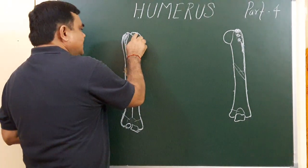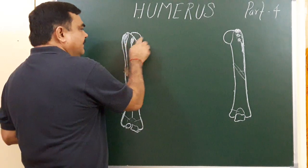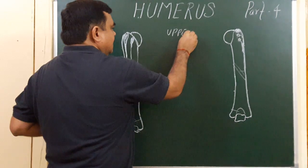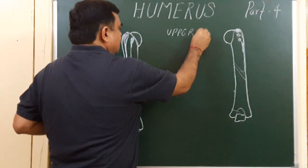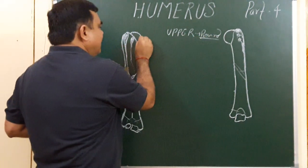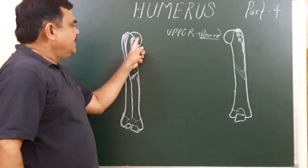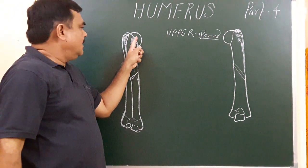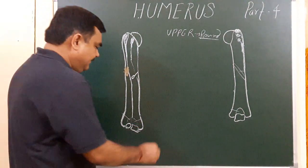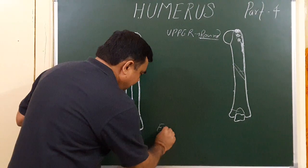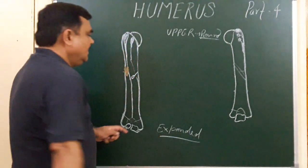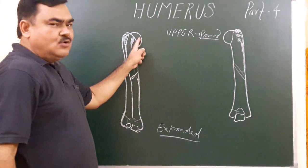As you can see, the upper end is rounded and forms the head, so it should be on the upper side. The lower end is expanded. These are the two ends: the upper end is round and forms the head, and the lower end is expanded.